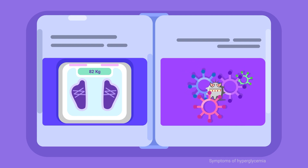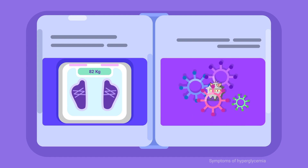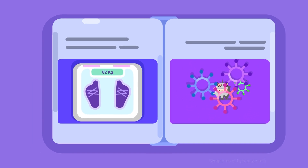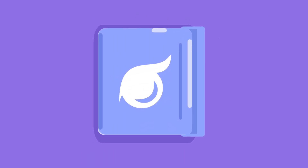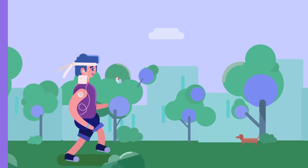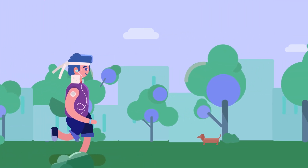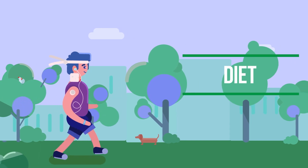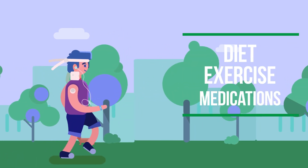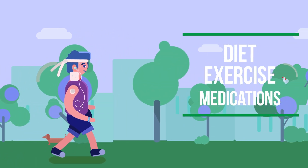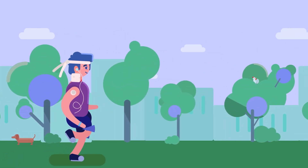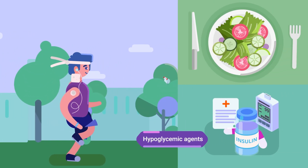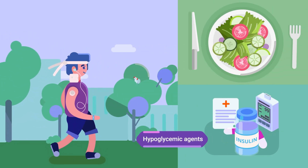Hyperglycemia can also occur due to other conditions that the patient has, such as infections. To prevent this complication, we must take adequate control with diet, exercise, and medications that lower the concentration of glucose in the blood, known as hyperglycemic agents.